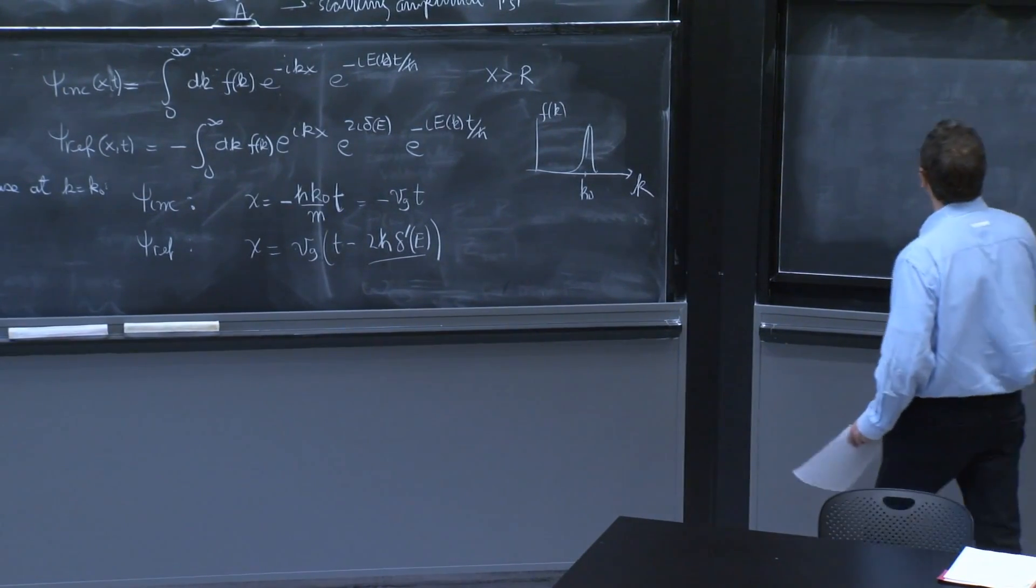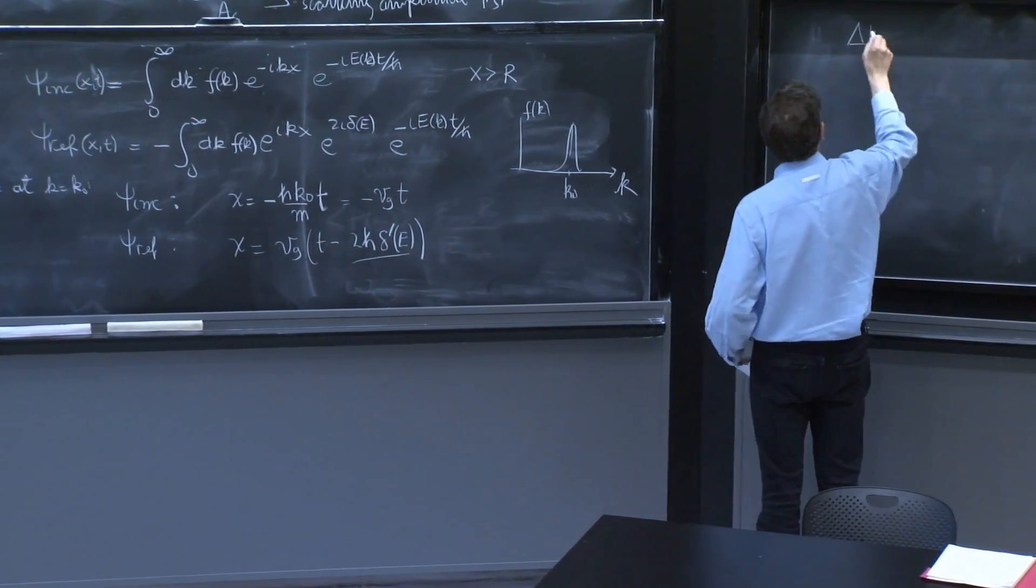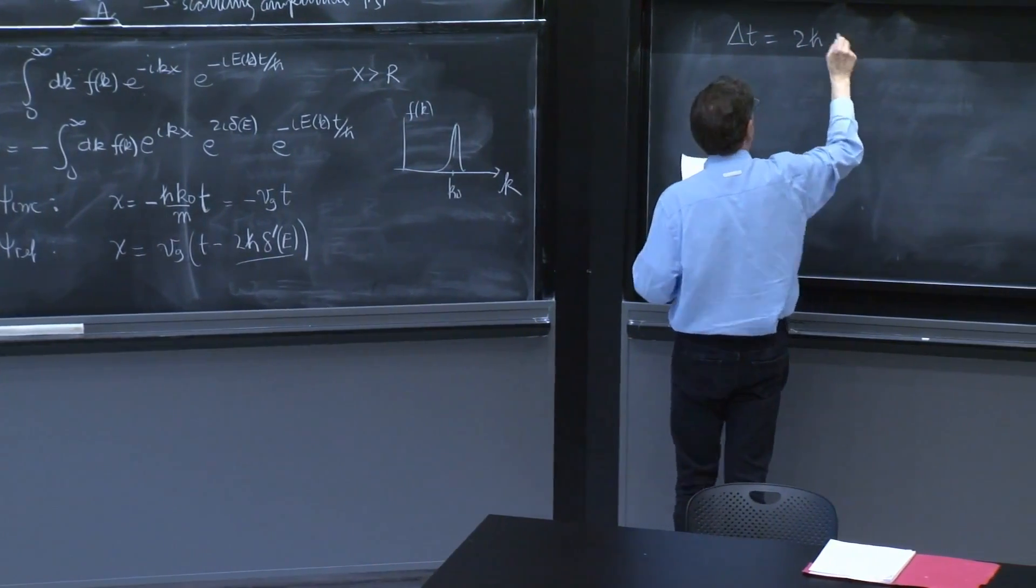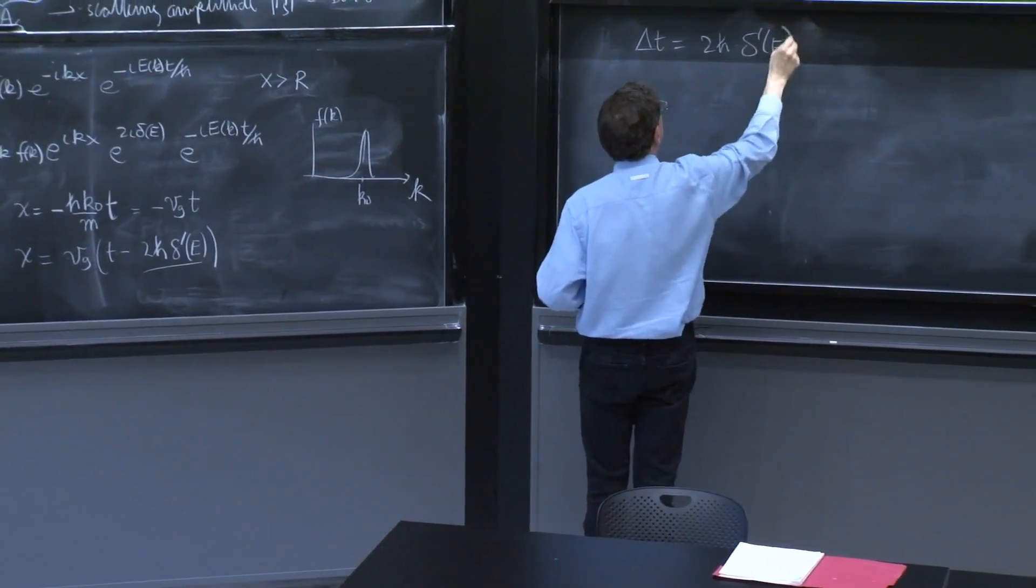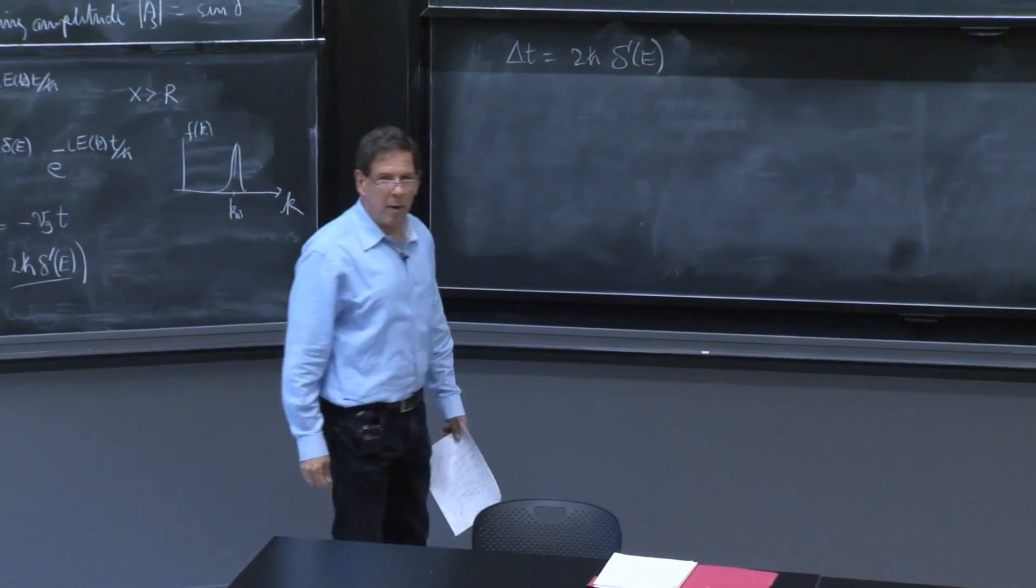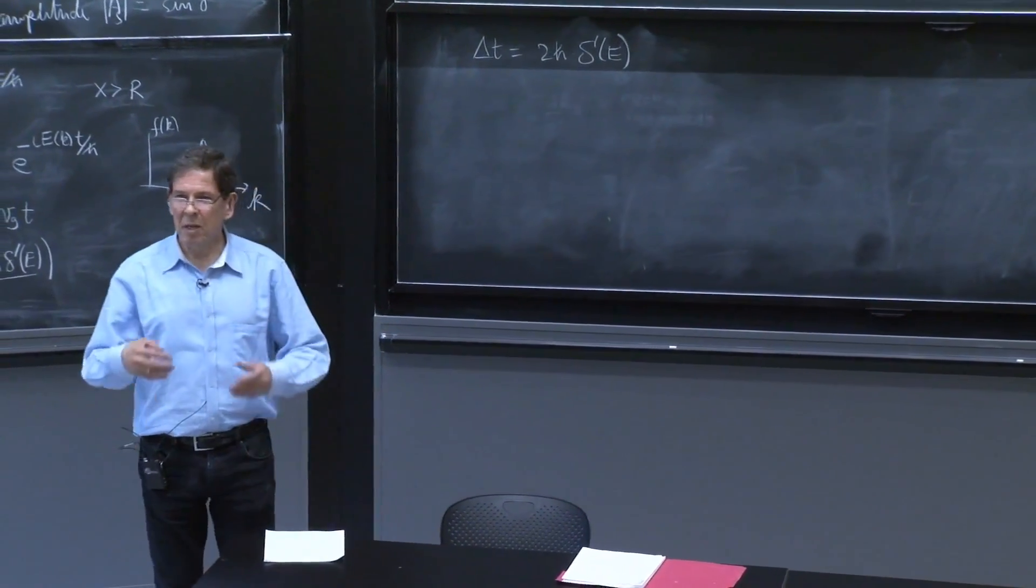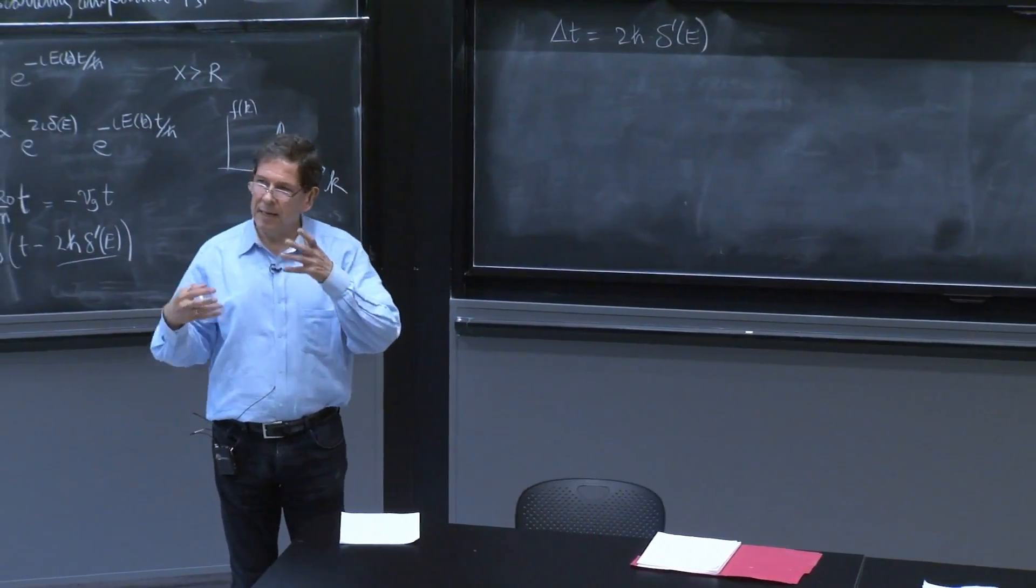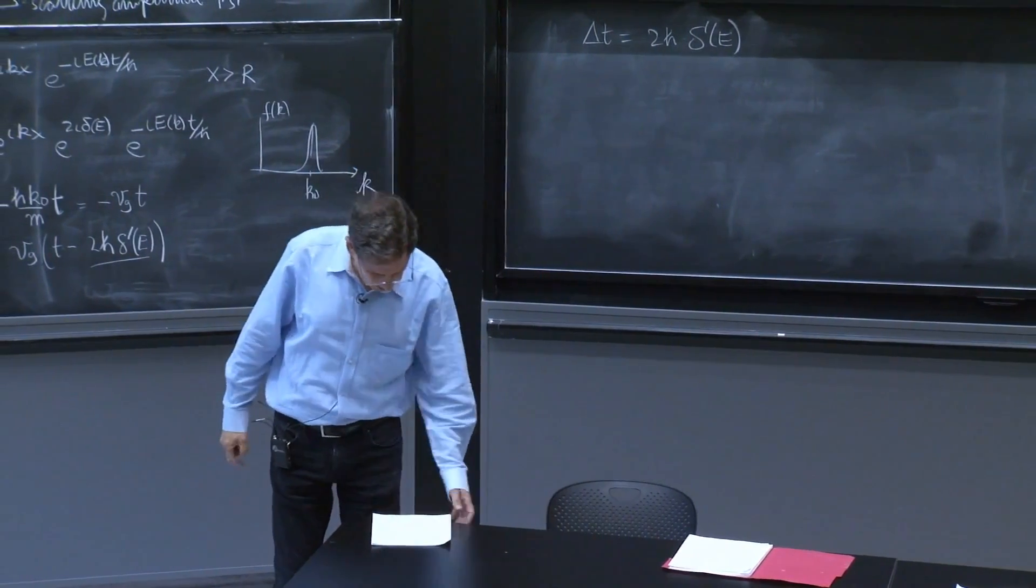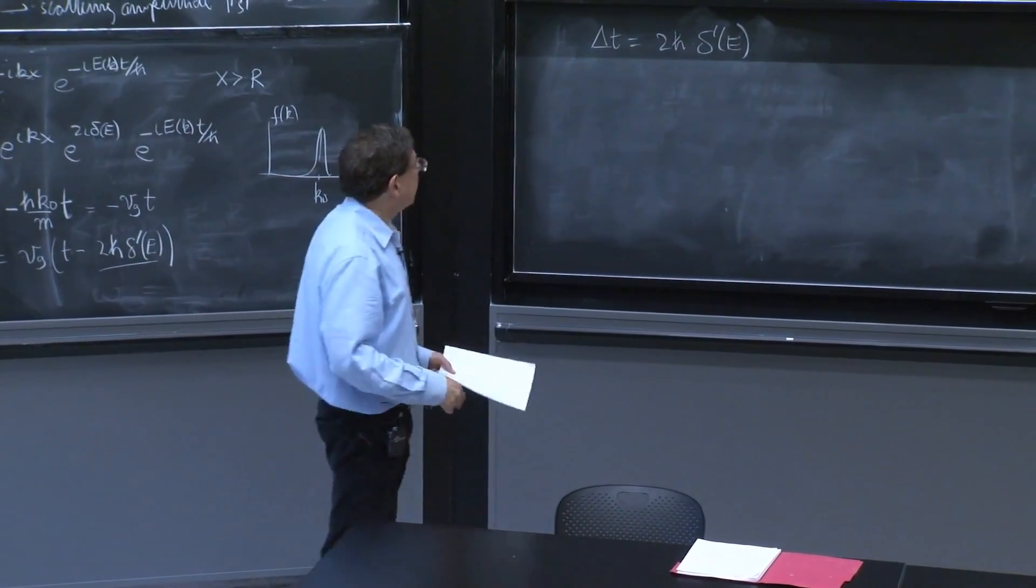The delay, delta t, is 2h bar delta prime of e. And let's write it in a way that you can see maybe the units better and get a little intuition about what this computation gives. For that, let's differentiate this with respect to k.